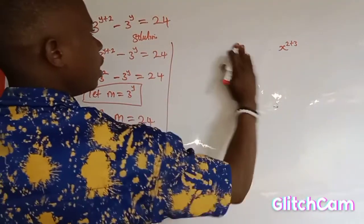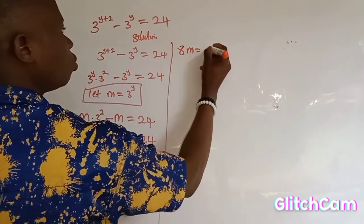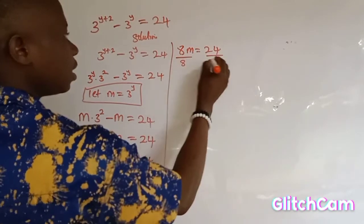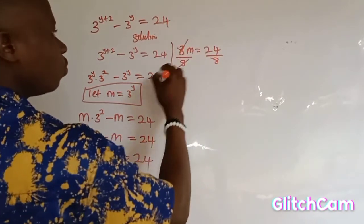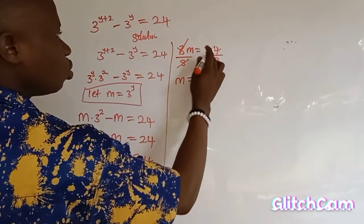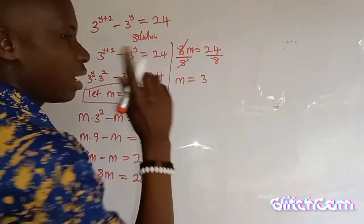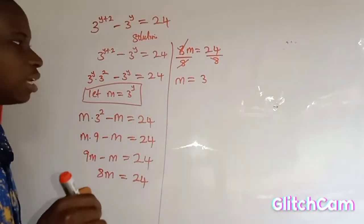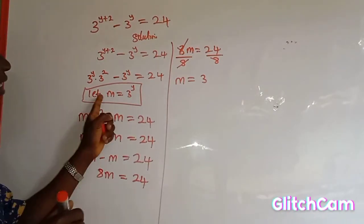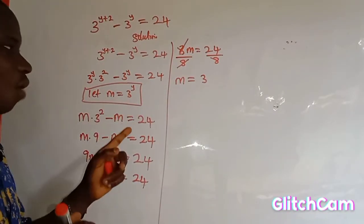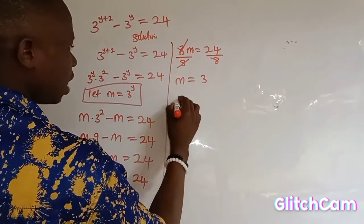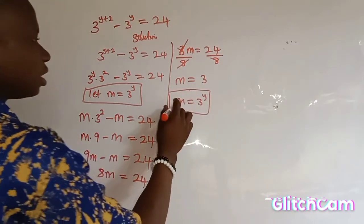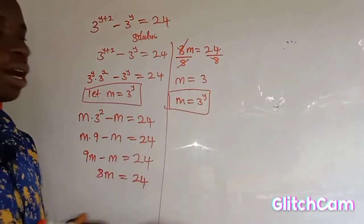So 8m is equal to 24. To find the value of m, we divide both sides by the coefficient of m, which is 8. So m is equal to 24 divided by 8, which is 3. Remember, the equation asks us to find the value of y, not m. Initially we let m represent 3 to the power of y.